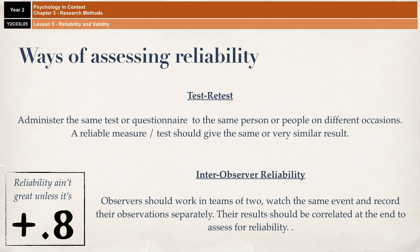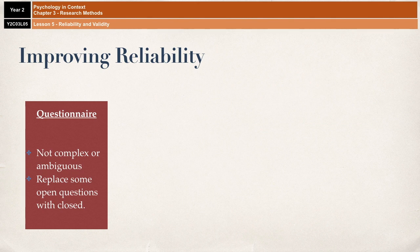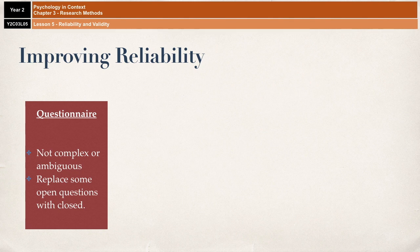So moving on — how do we actually improve the reliability of a study? If you are using questionnaires, the reliability should be measured using the test-retest method. A questionnaire that produces a low test-retest reliability may need some items to be deselected or rewritten. For example, if some questions are too complex or too ambiguous, they may be interpreted differently by the same person on different occasions. One solution might be to replace open questions with closed questions or fixed-choice alternatives, which may be less ambiguous and leave less room for interpretation.